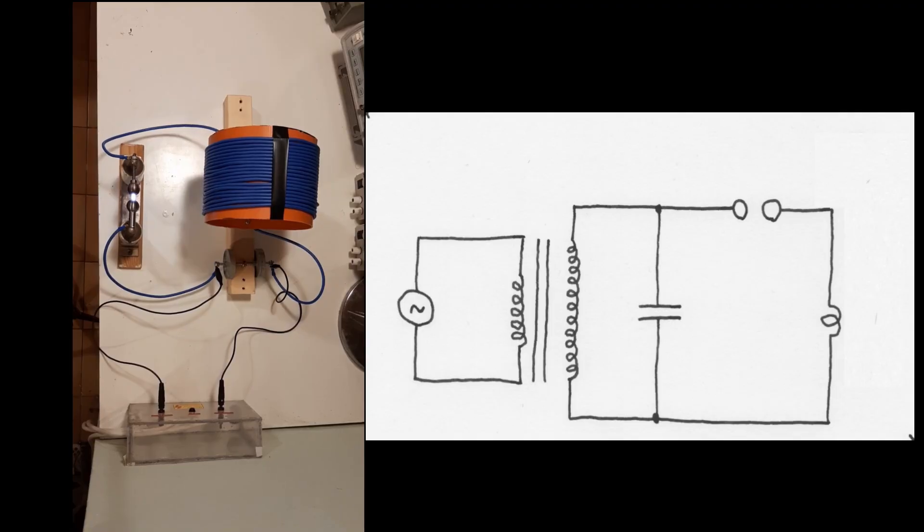This is the setup we left last time. As you can see it's quite simple - we have a couple of small Doorknob capacitors connected to a high voltage source, connected to a 20-turn coil through a spark gap. The schematic is the one you can observe here.